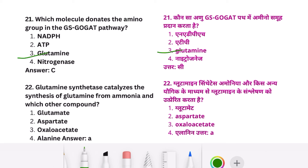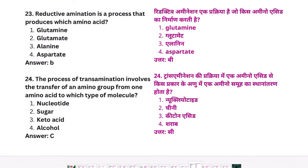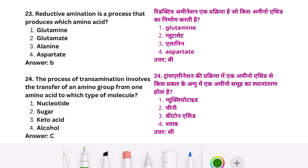Glutamine synthetase catalyzes the synthesis of glutamine from ammonia and which other compound? Glutamate is your right answer. Reductive amination is the process that produces which amino acid? Glutamate is your right answer. The process of transamination involves the transfer of an amino group from one amino acid to which type of molecule? Keto acid.